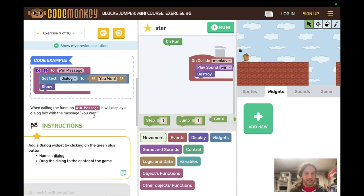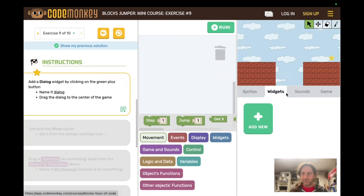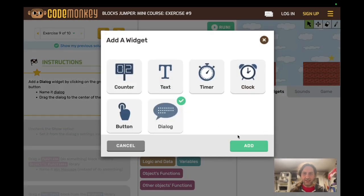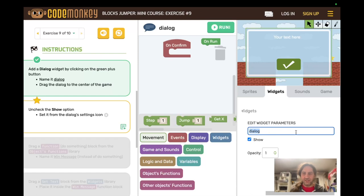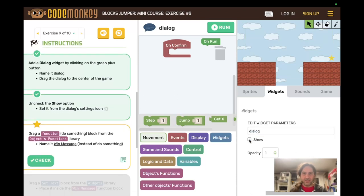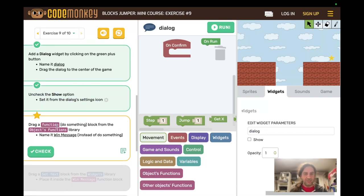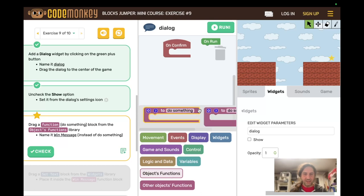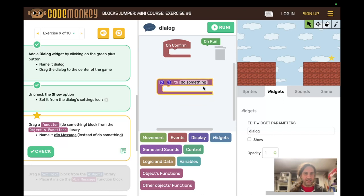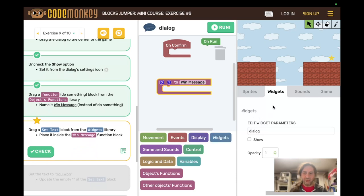Now we're going to use our first widget. So they need to be in the widgets tab now. Add new dialogue. And it's already called dialogue. So you can just continue. Uncheck the show option, which hides the dialogue. Now drag a function do something block from the object functions library. And we're on the dialogue sprite. Objects functions. This is the do something function. It doesn't say function, but it says to do something. We drag it in and we change it to win message. And you want it to be exactly the right capitalization and spacing.